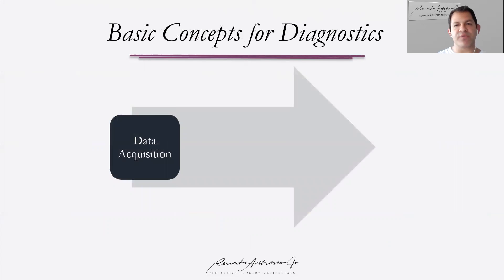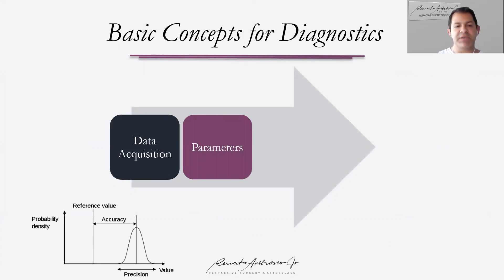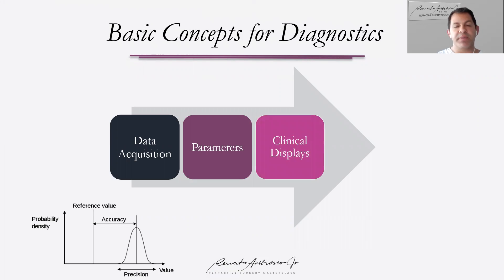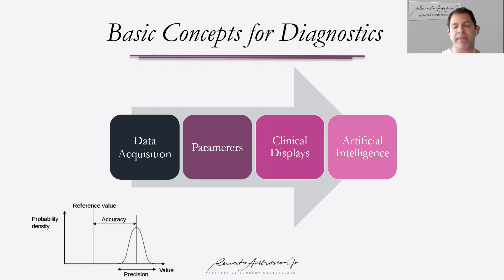When you think about concepts for diagnosis, it's very important that we have data and parameters. These parameters have to be considered in terms of accuracy — we need a reference value for calculating accuracy — and also precision, which is the repeatability of measurements within the same subject. If you do five consecutive measurements, you can calculate the repeatability. It's important to organize those parameters in a display so we can make clinical decisions, and artificial intelligence can help us greatly with a multi-dimensional approach considering many parameters that go beyond human capability to analyze.